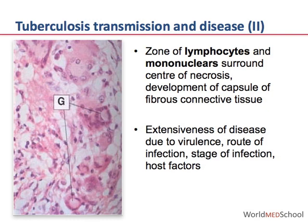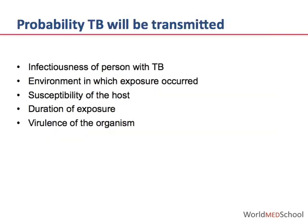The probability that tuberculosis will be transmitted depends on the infectiousness of the person with tuberculosis, the environment in which exposure occurs — whether it is in a closed environment or an outdoor area — the susceptibility of the host, whether they are immunocompetent or have some immunocompromising condition, and the duration of exposure and the virulence factors associated with the organism itself.